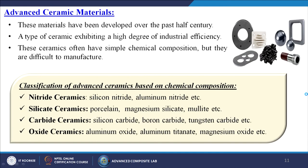Advanced ceramics have been developed over the past half century and are research- or application-based. They exhibit a high degree of industrial efficiency and often have simple chemical compositions but are difficult to manufacture. Classifications based on chemical composition include: nitride ceramics (silicon nitride, aluminium nitride), silicate ceramics (porcelain, magnesium silicate, mullite), and carbide ceramics (silicon carbide, boron carbide, tungsten carbide) — widely used for cutting tool materials.